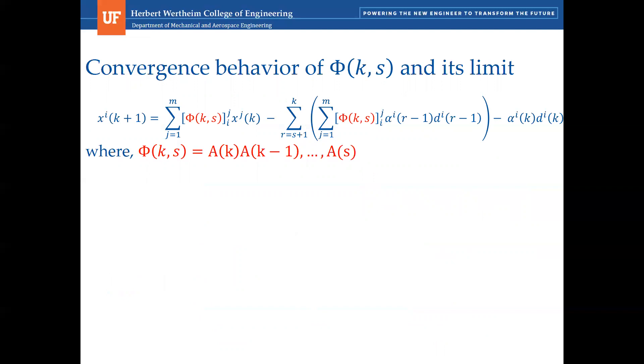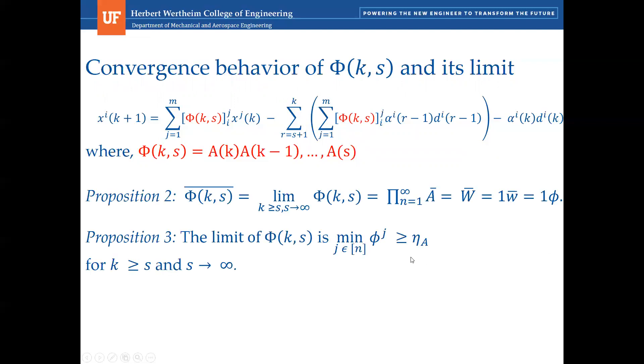Now we will look at the convergence of the decision vector update. To study its convergence over time S to K, Xi update is reformulated as follows. More details are provided in the paper. For time purposes, we will focus only on the most important here, which is big phi. Big phi is the product of all the A's matrices. In our algorithm, A is clearly defined, which allowed us to get these two propositions. Big phi converges to W bar for K greater than S, and S goes to infinity, and the limit of big phi is greater or equal to eta A.